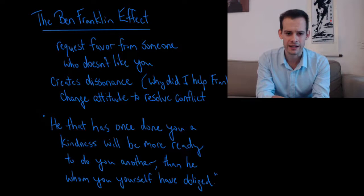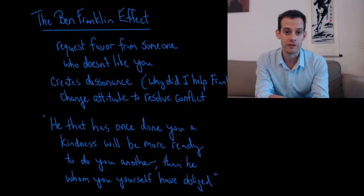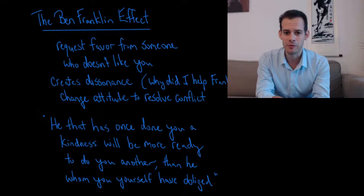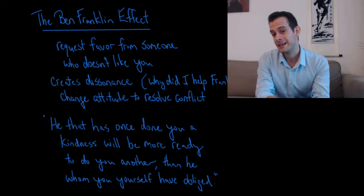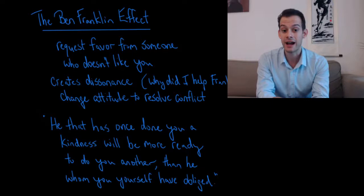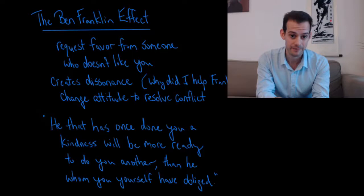Franklin thought this created dissonance because the person would ask himself: why did I help that Franklin character? I don't even really like the guy — why would I do him a favor and lend him this rare book? Franklin supposed the person would change their attitude to resolve this conflict, saying: well, maybe Franklin's not so bad — I guess I lent him the book because he's not as terrible as I thought. This meant they might be more willing to help Franklin in the future. As Franklin wrote: 'He that has once done you a kindness will be more ready to do you another than he whom you yourself have obliged.'